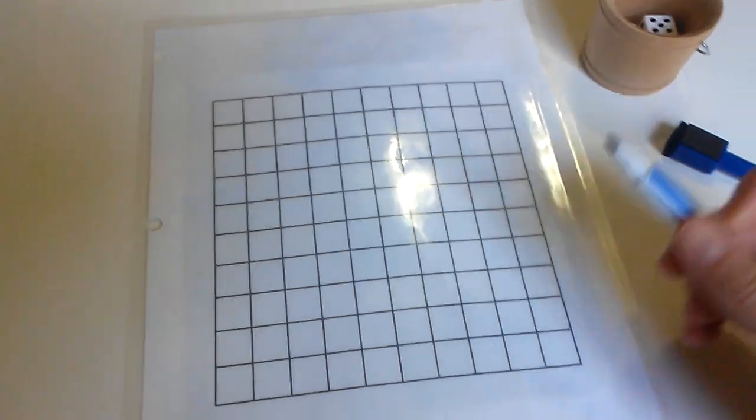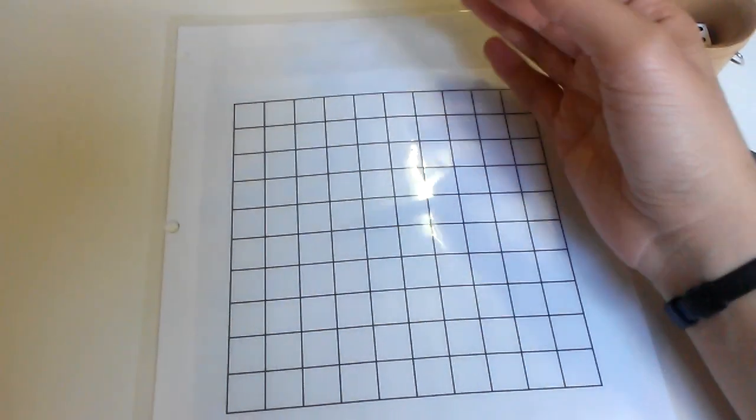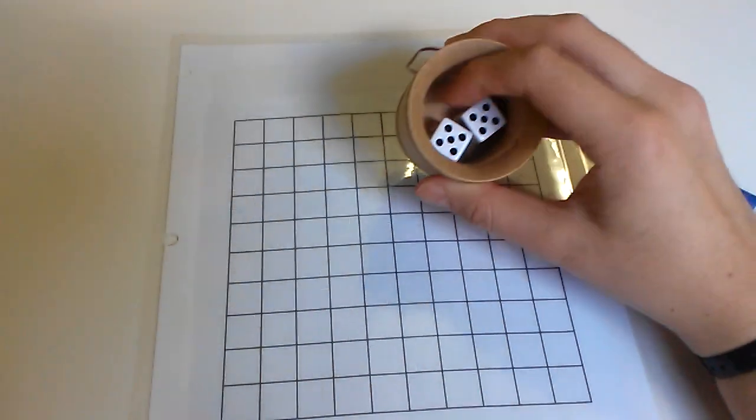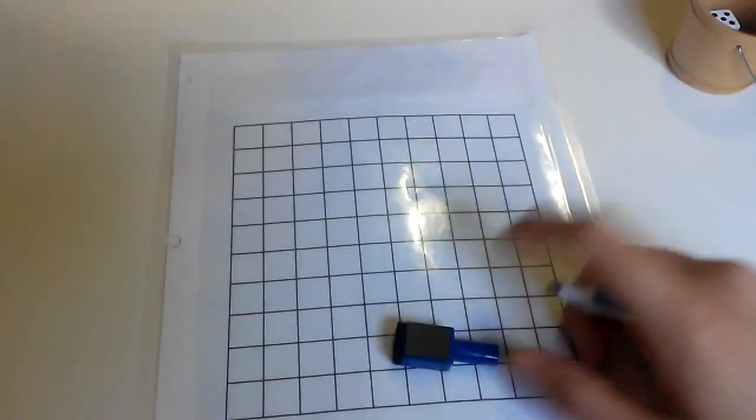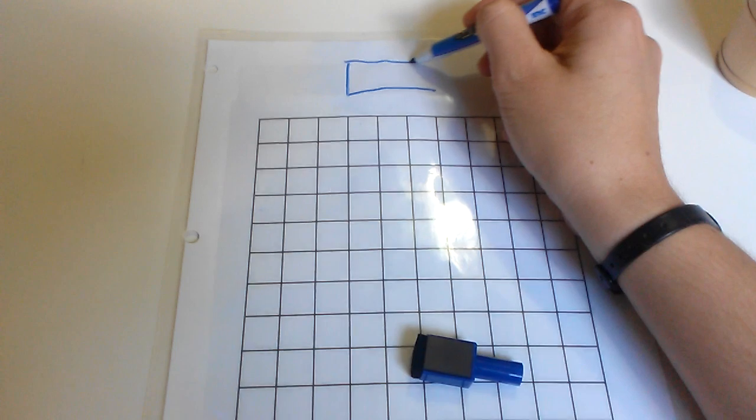So we're just playing games to reinforce that. You can see it's a blank 100 chart, and the way that we played this game was with a couple of dice.